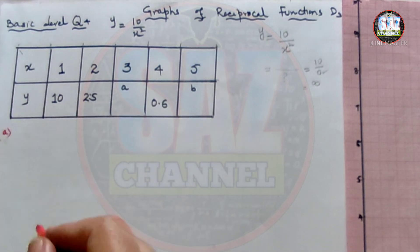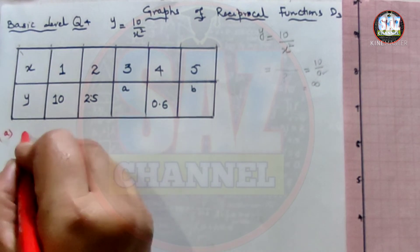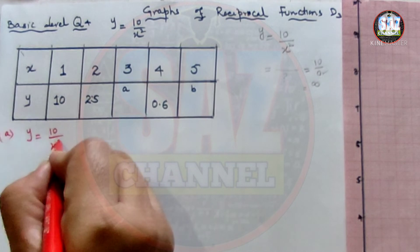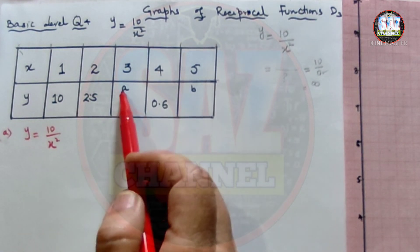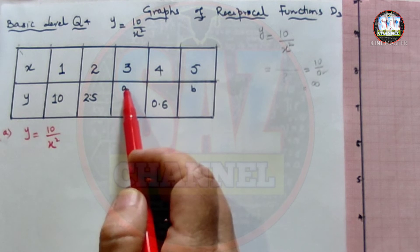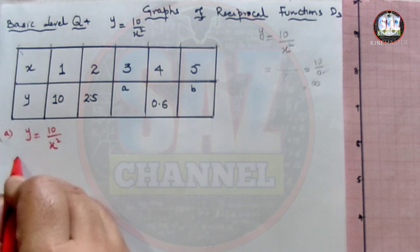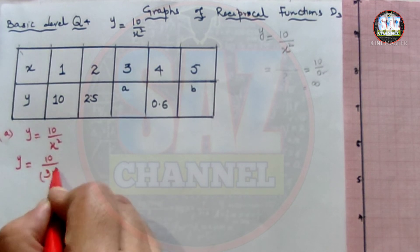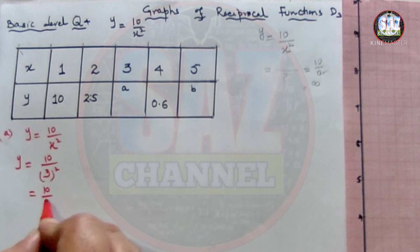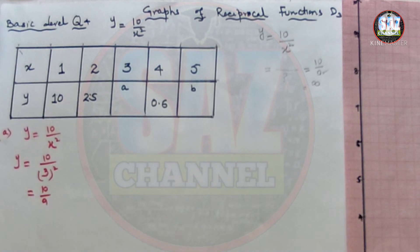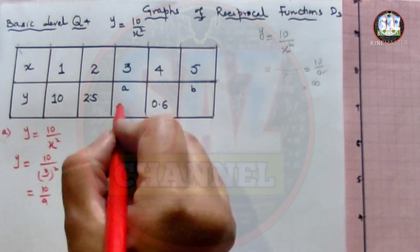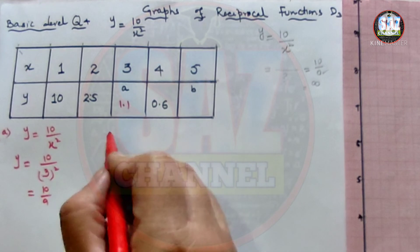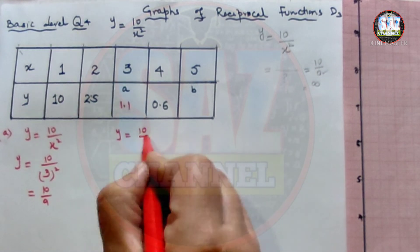To find the unknown values, we use the function y = 10/x². The first unknown is the value of y for x = 3. Substituting: y = 10/3² = 10/9, which gives approximately 1.1. Let me recheck — yes, this is 1.1.